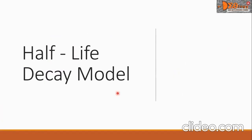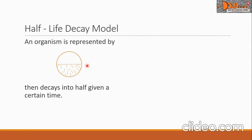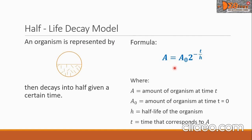For the Half-Life Decay Model, given an organism represented by a circle, the organism decays into half given a certain time. We have a formula: A equals A-sub-zero times 2 raised to negative T over H, where A is the amount of organism at time T. A-sub-zero is the amount at time T equals 0. H is the half-life of the organism, and T is the time that corresponds to A.